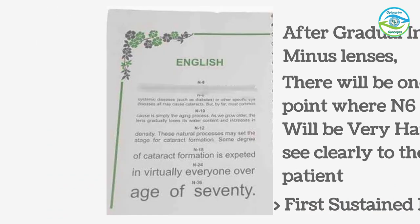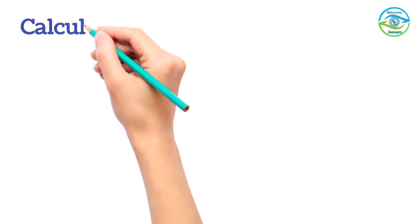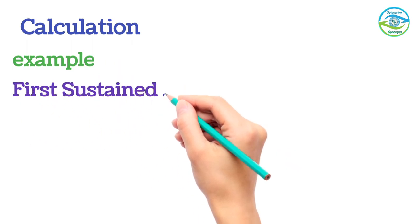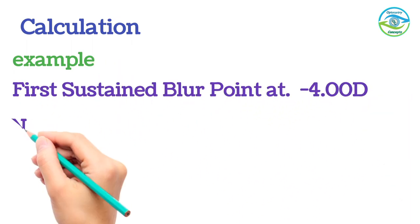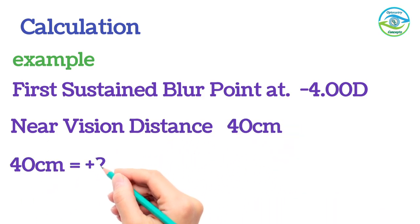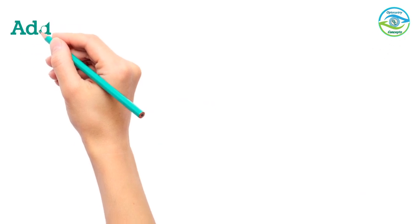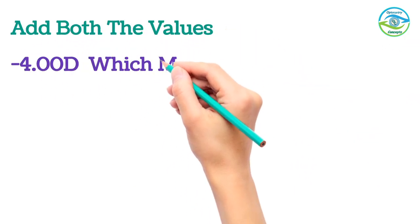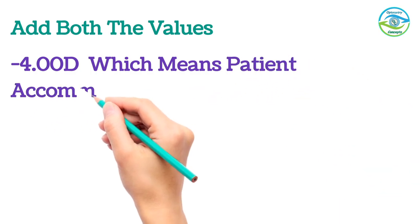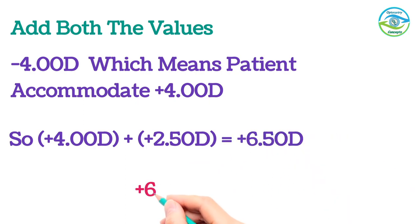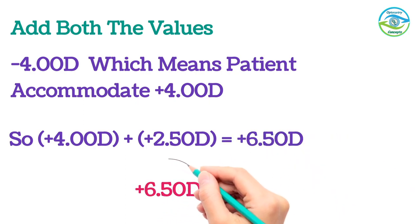Once we obtain the first sustained blur point, we do the calculation. For example, if the first sustained blur point is at -4.00 D, and the near distance is 40 cm, which is equivalent to +2.50 D, we add both numbers together (ignoring the minus sign), giving us a final result of +6.50 D — which is our amplitude of accommodation.